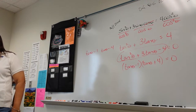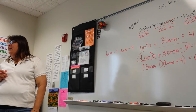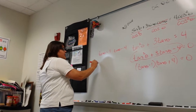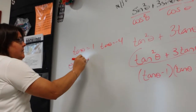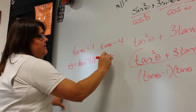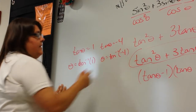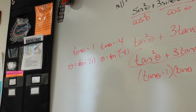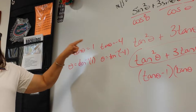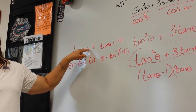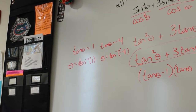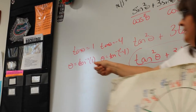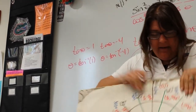Student: Can I look at arc tan? Teacher: You would invert, yes. So theta equals inverse tan — tan to the negative one — of one. And theta equals tan to the negative one of negative four. In my brain I'm thinking: where is tangent positive? In the first and third quadrants. So my answer for this will be in those quadrants.